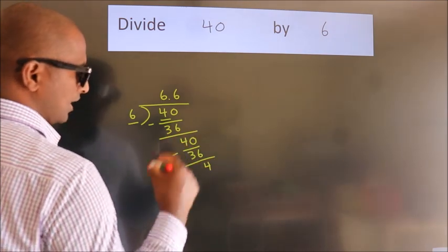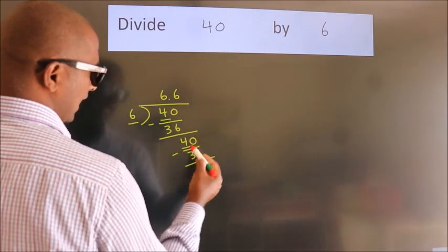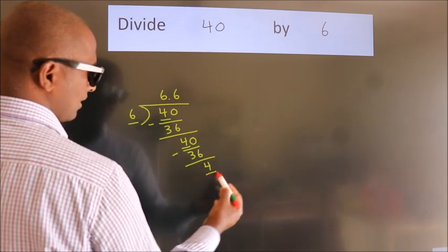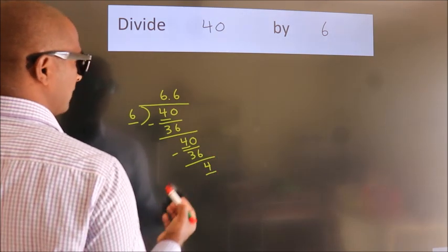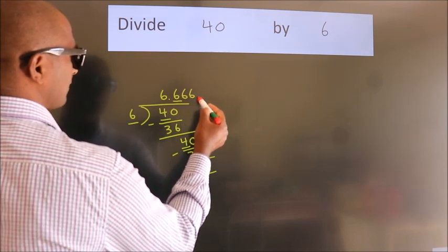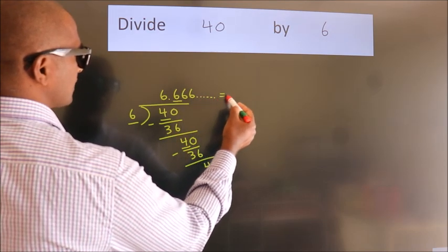Now you observe. We had 4 here and we got 4 again. That means this number keeps on repeating. So this is our quotient.